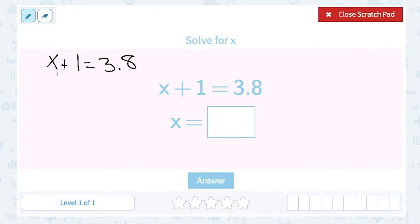x plus 1 equals 3.8. In order to solve for the variable x, we need to get that x all by itself. x is what we call the variable, and a variable is a letter that stands in for some unknown number.